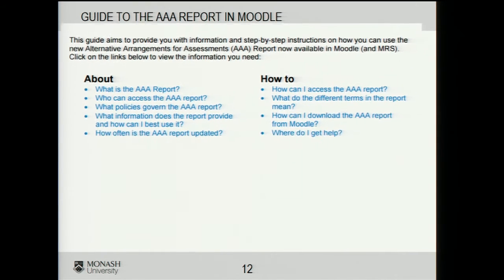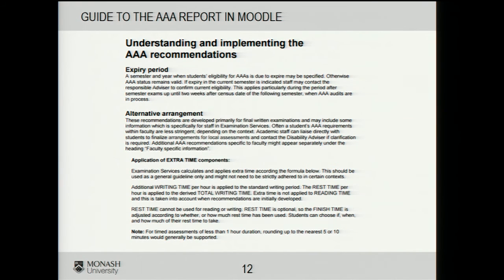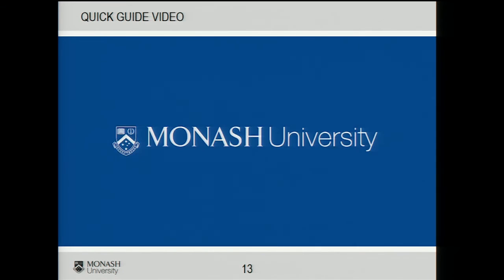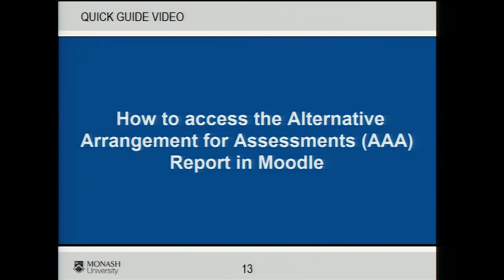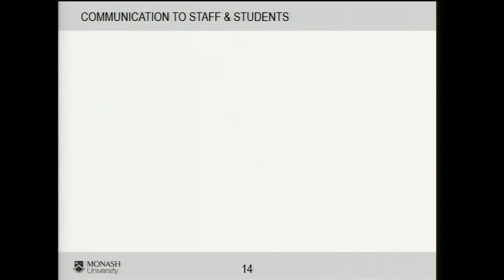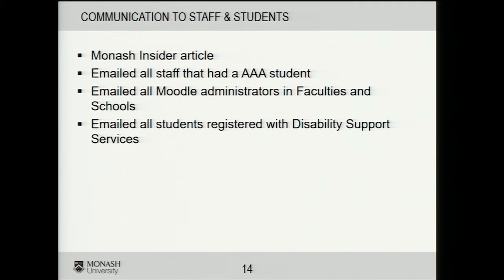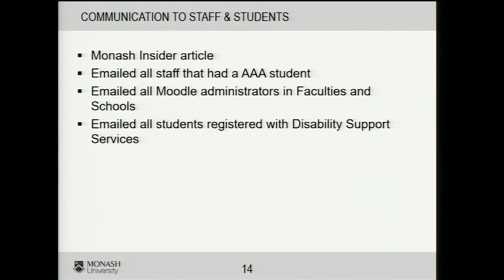Some of the deliverables from the project included a guide to how to use the report — it's about a six-page document. We also created a short two-minute video to help academics quickly understand how to use the report. We communicated to staff and students about the AAA information available in Moodle through things like the Monash Insider article, which is a weekly newsletter. We emailed all staff who had an AAA student, informed Moodle administrators, and informed all students registered with DSS.